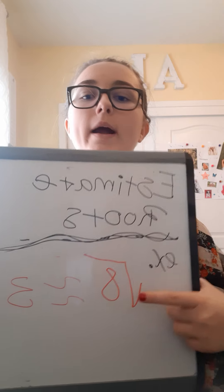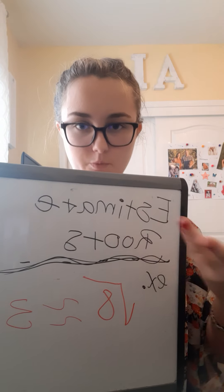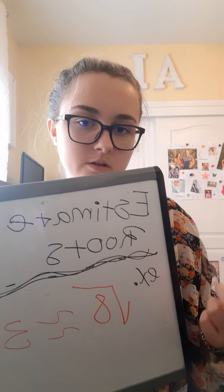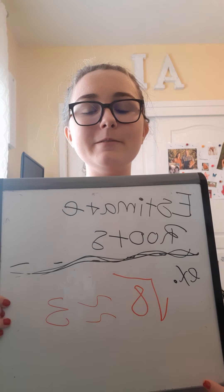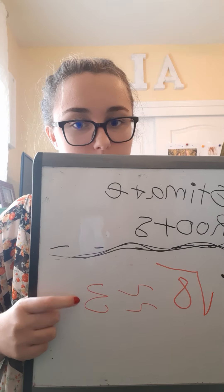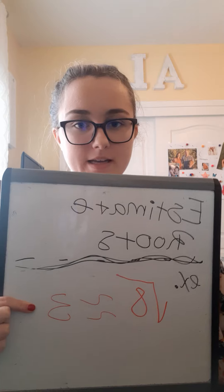Now I'm going to throw some trickier things at you, so pay attention. We're going to try to find the square root of eight. The square root symbol looks almost like a division bar. Whatever number this is, when you square it — multiply it by itself — you need to get back to eight.